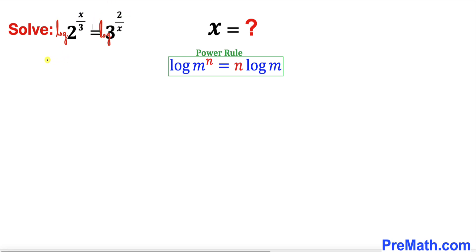So therefore we get x divided by 3 times log of 2 equals to, on the right hand side, 2 divided by x times log of 3.